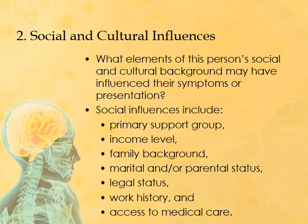Social and cultural influences: we want to know what elements of this person's social and cultural background may have influenced their symptoms or presentation. Social influences may include primary support group — for someone living at home, this could be parents or guardians, or for an adult, a partner or spouse — income level, family background, marital and/or parental status, legal status such as involvement in the legal system, probation, or recent release from an institution, work history, and access to medical care.